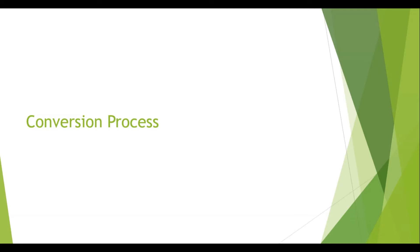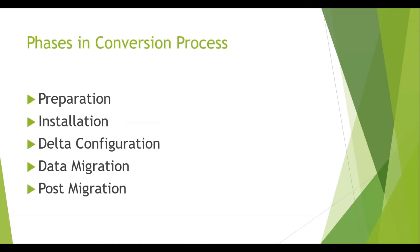System conversion means the customer is already using SAP ECC and now wants to migrate to SAP S4HANA. This migration project is called a system conversion project. The conversion process is divided into five phases: preparation, installation, delta configuration, data migration, and post-migration. Today we'll understand what to consider when starting a conversion project and what tools SAP S4HANA provides to support it.